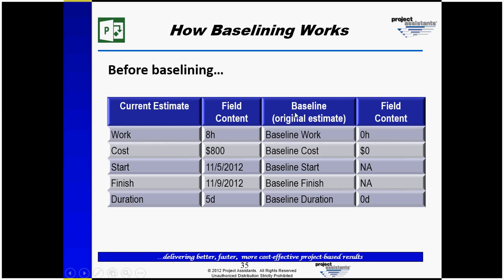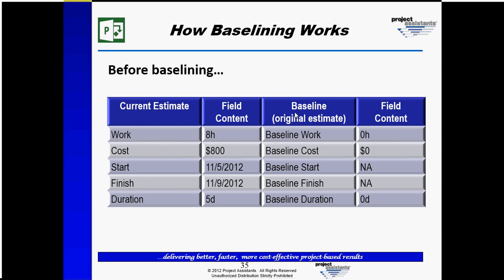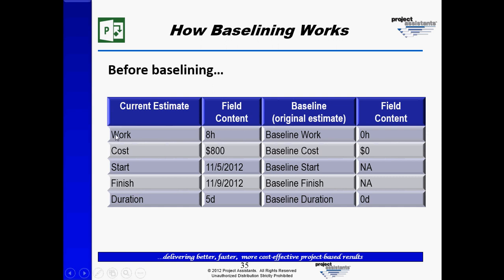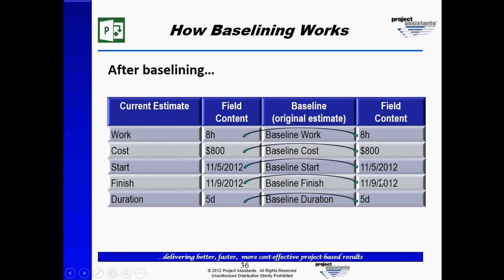There are five fields in Microsoft Project that are used for tracking estimates: work, cost, start, finish, and duration. When we baseline our plan, these fields are copied over from the current estimate to the baseline estimate.